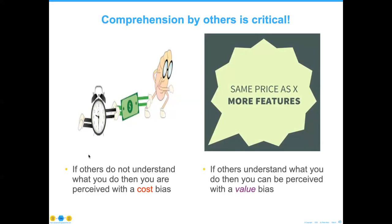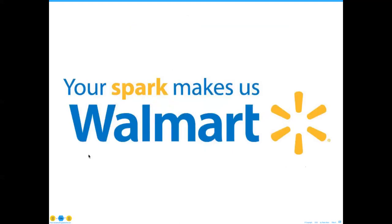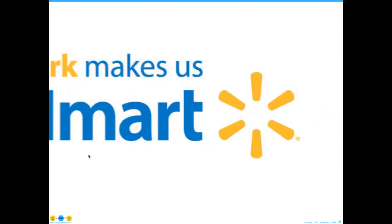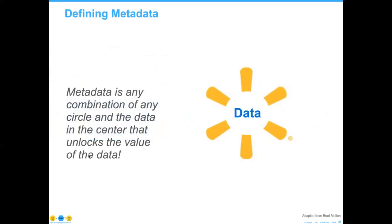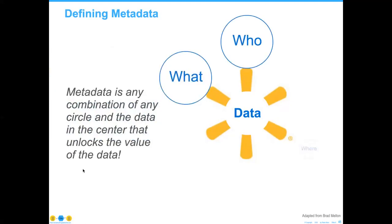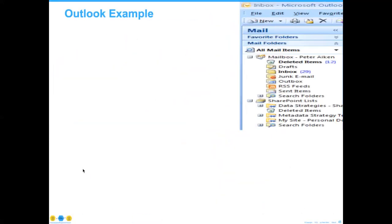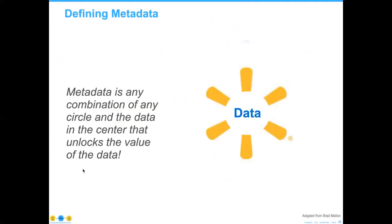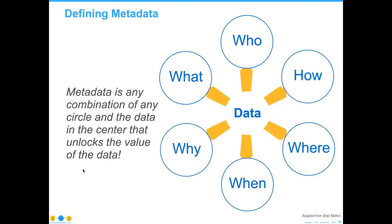One of the organizations I've worked with over the years is Walmart, and they had a brilliant idea around metadata. What they looked at was to say that metadata is any combination, for their organization, of a circle and the data in the center that unlocks the value of that data. And if you look at those columns — you may recognize them as the columns of the Zachman framework — that works out very nicely.